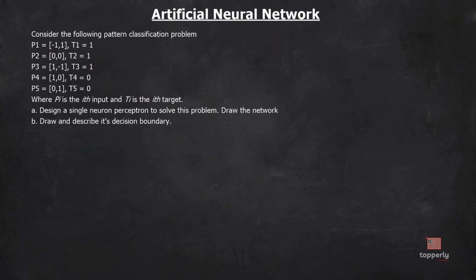Moving on to the next question: consider the following pattern classification problem with patterns P1, P2, P3, P4, P5 and desired outputs T1, T2, T3, T4, T5, where Pi is the ith input and Ti is the ith target. Design a single neuron perceptron to solve this problem, draw the network, and draw and describe its decision boundary.